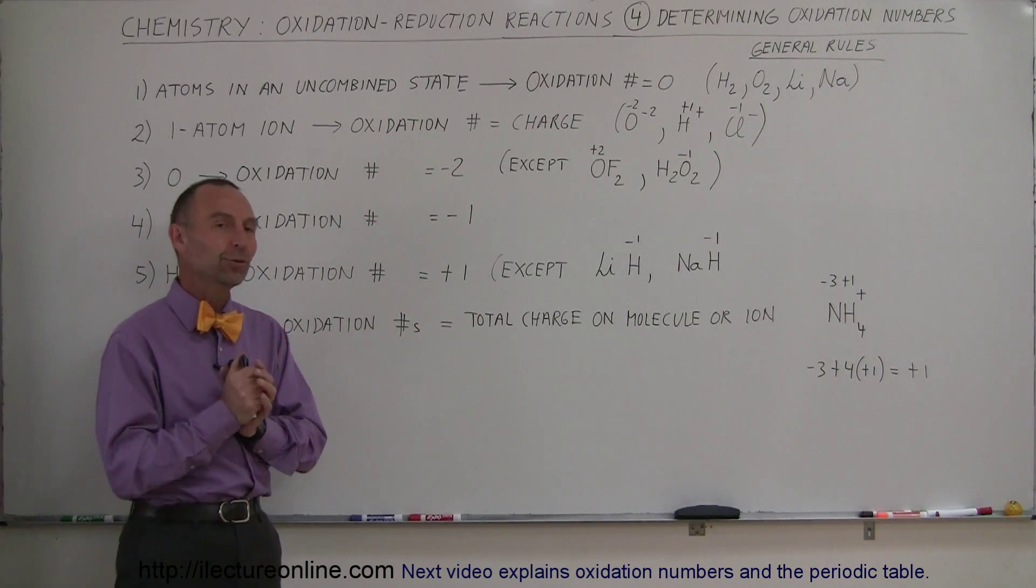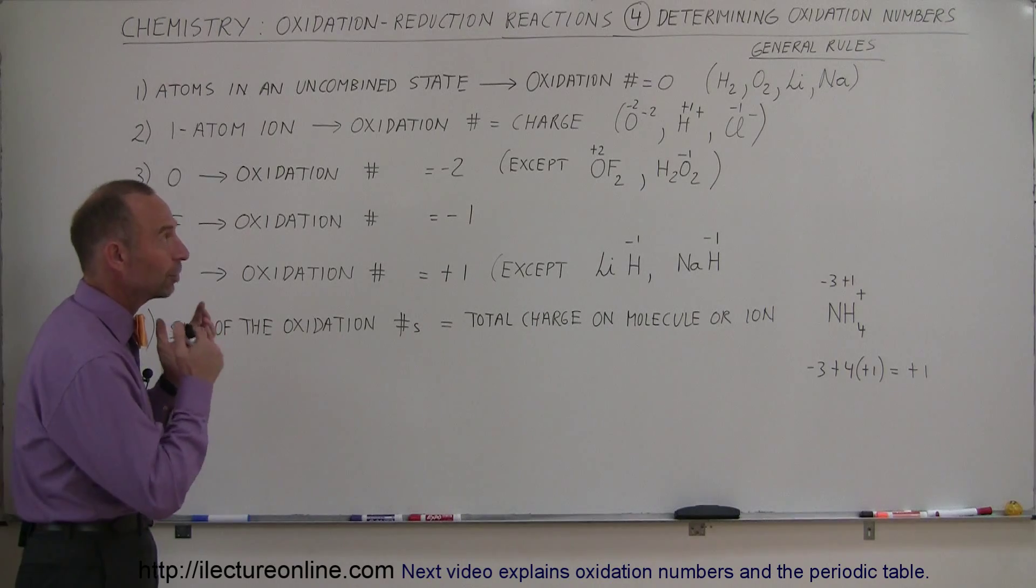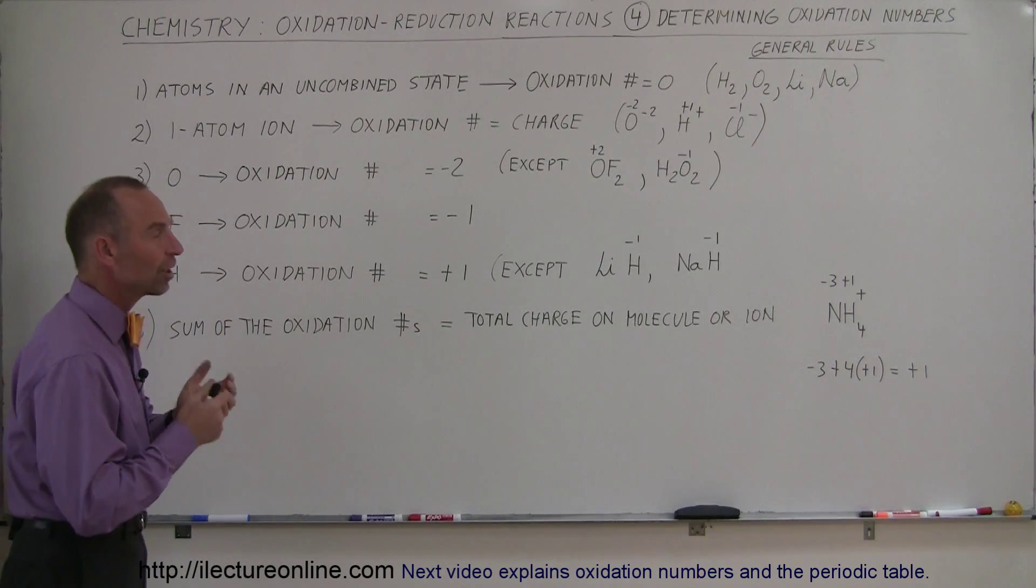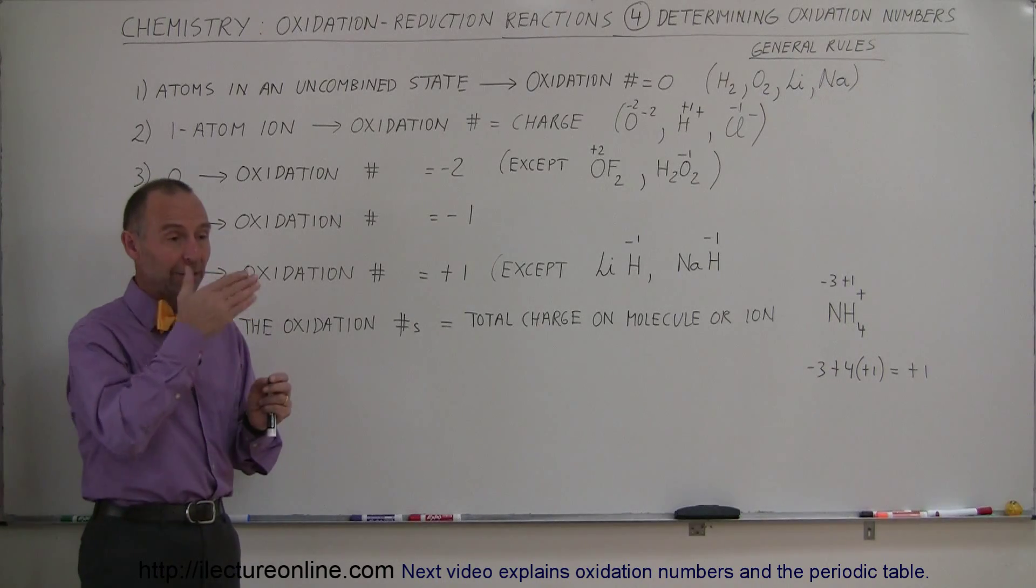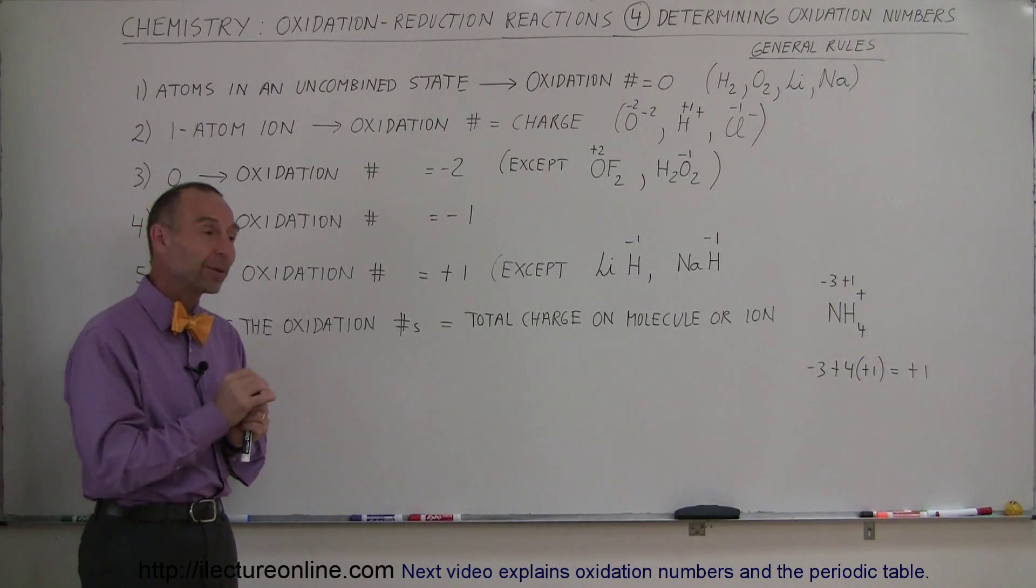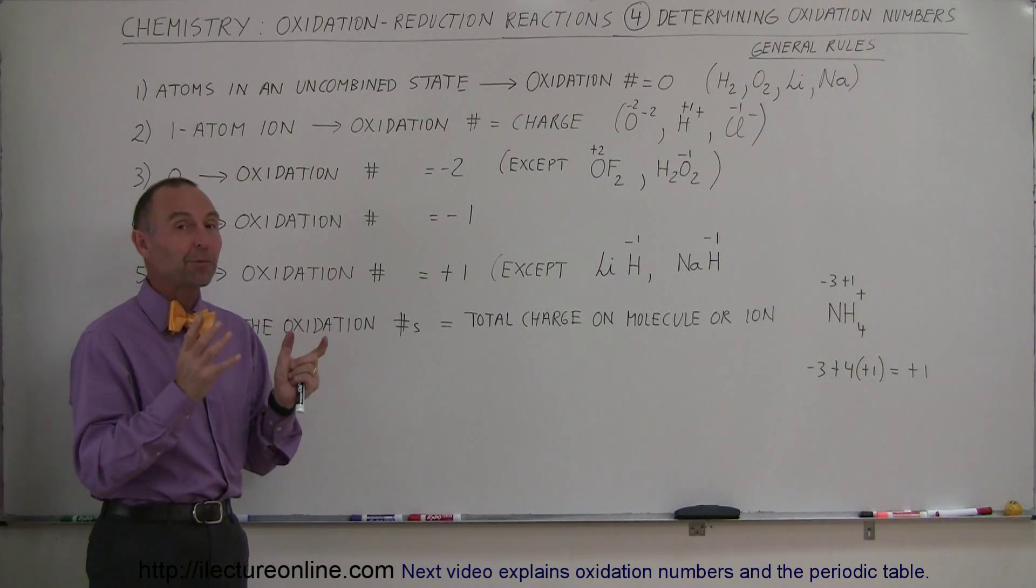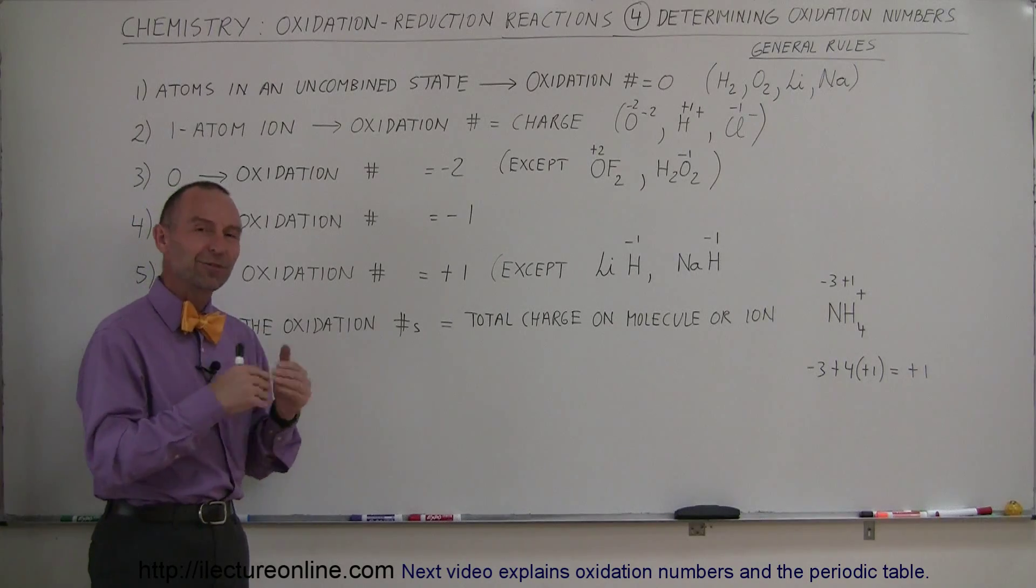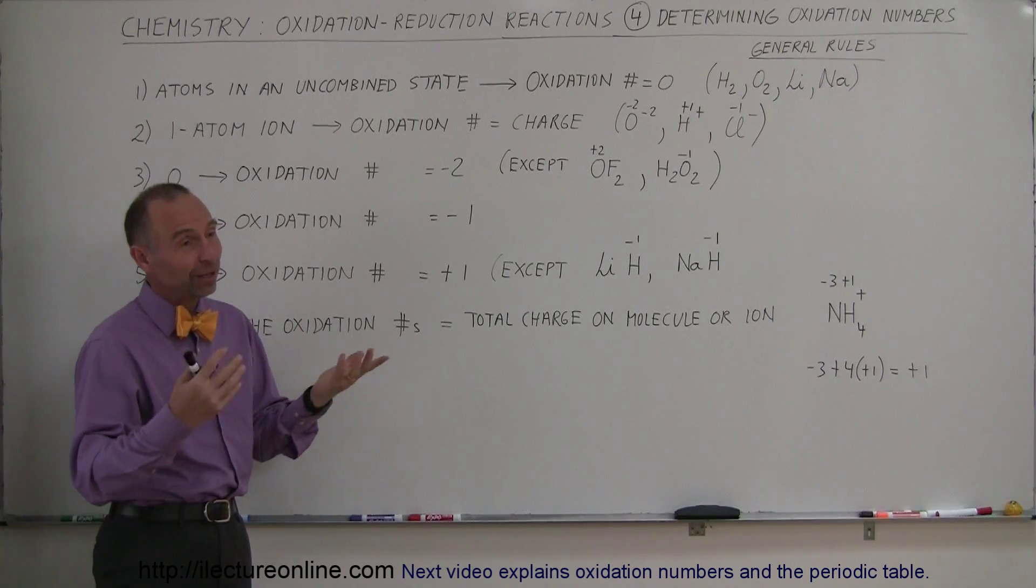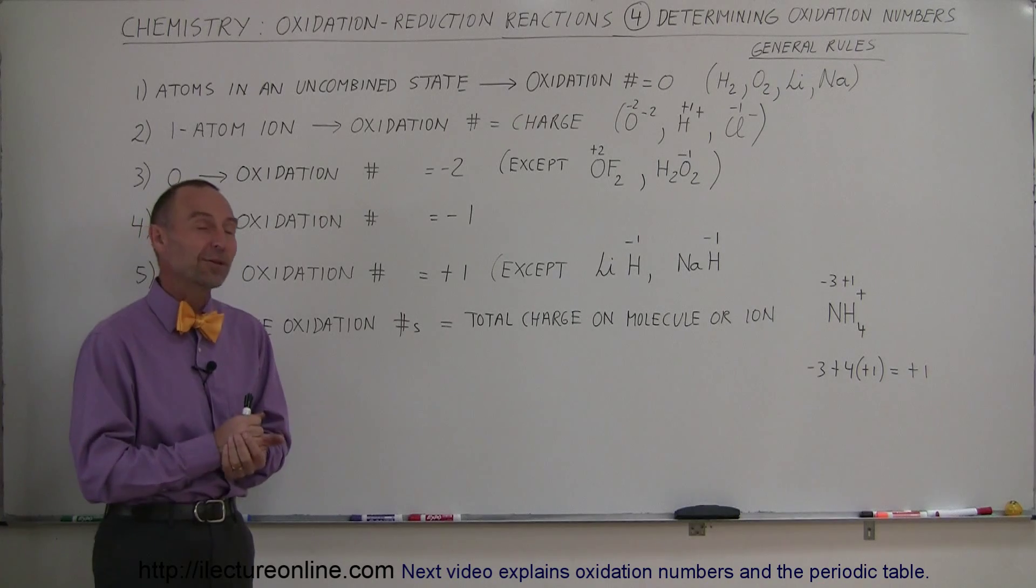You may want to ask first a question, why in the world would we even want to know that? Well, just another tool in the toolbox to figure out how to come up with the ions and molecules. Back to how do we determine the oxidation numbers? There are some general rules. What we can also do is go to a periodic table and look at all the various oxidation numbers each atom can have and just plainly memorize them. But I've tried that before, and that's pretty difficult to do.